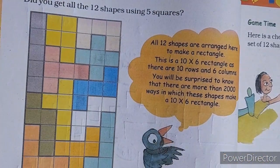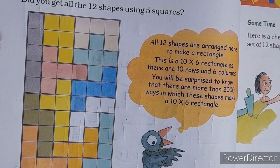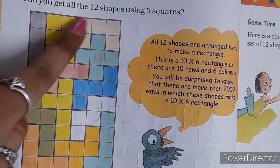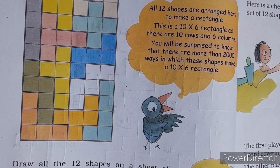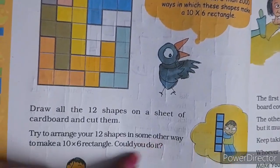Did you get all twelve shapes using five squares? Yes, we can all arrange. If we draw this way, we can arrange all these shapes. Draw all the twelve shapes on a cardboard and cut them. Try to arrange twelve shapes in some other way.